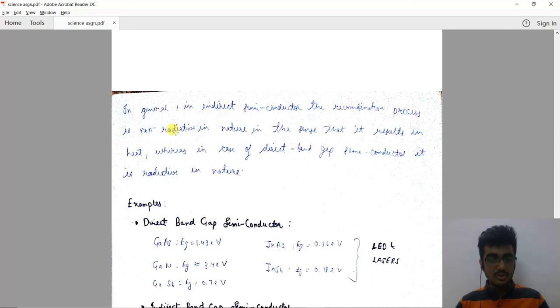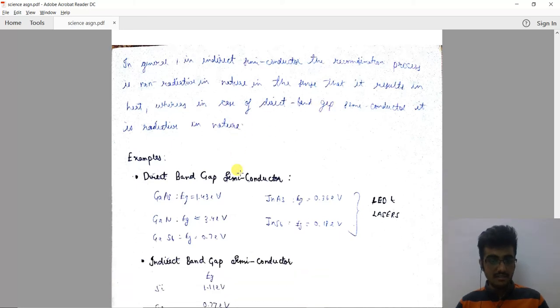The recombination process is non-radiative in nature, in the sense that it results in heat, whereas in the case of direct band gap semiconductors, it is radiative in nature.